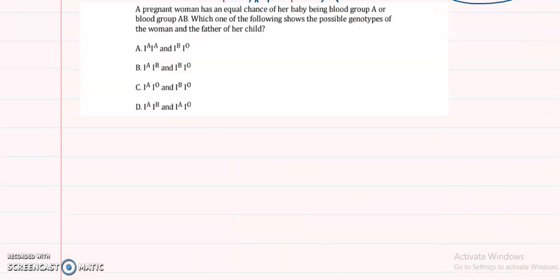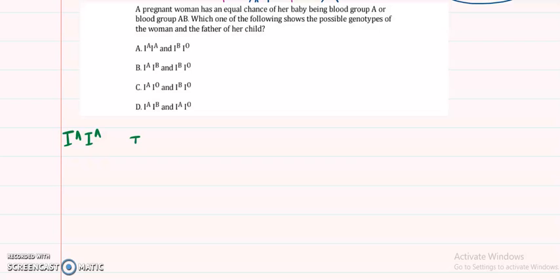The next question asks: a pregnant woman has an equal chance of her baby being blood group A or blood group AB. Which of the following shows the possible genotypes of the woman and the father? We will work through each option. For option A — the woman is IAIA and the father is IBIO — the child's blood group should come out only as A or AB with no other blood group appearing.